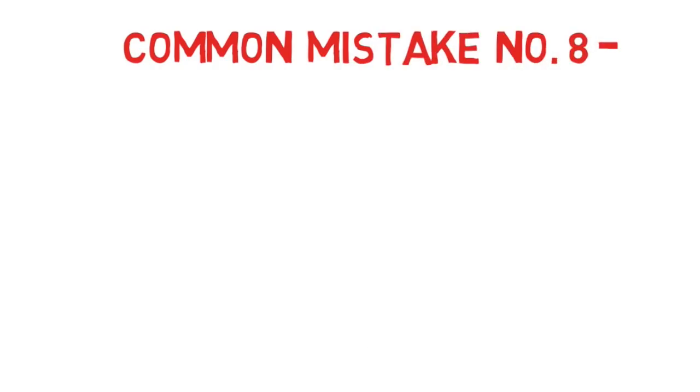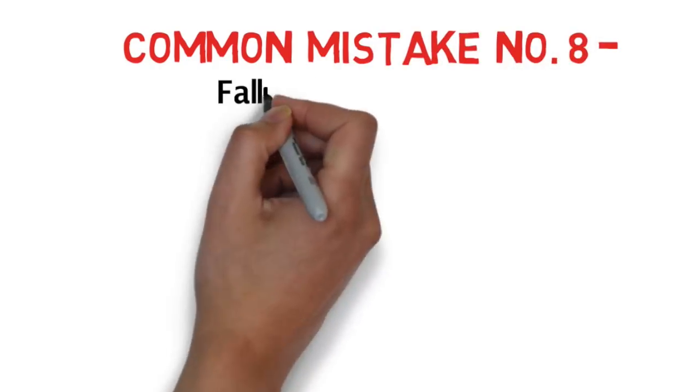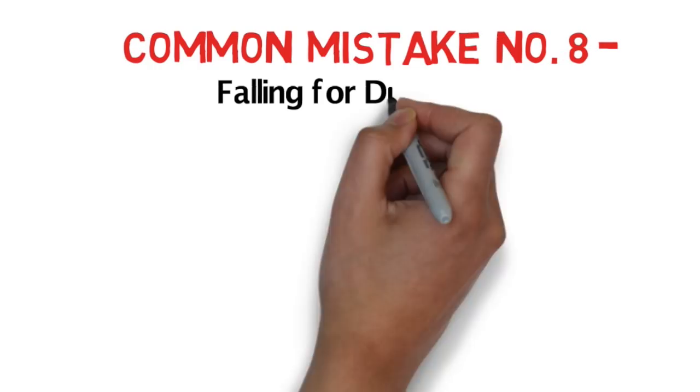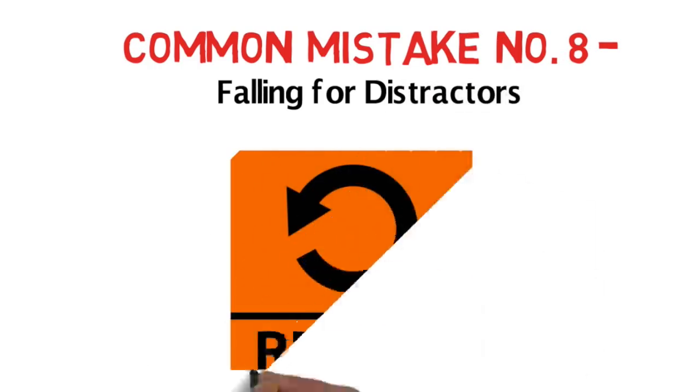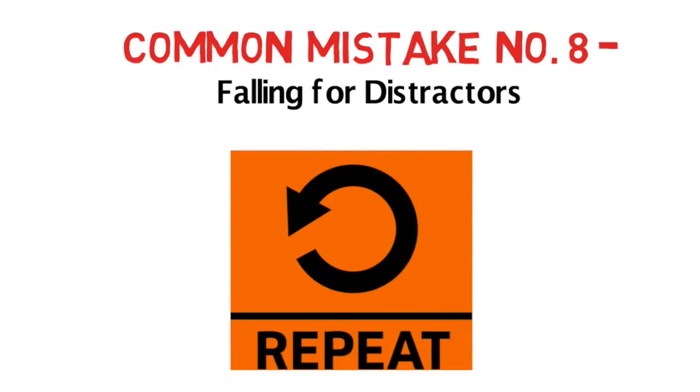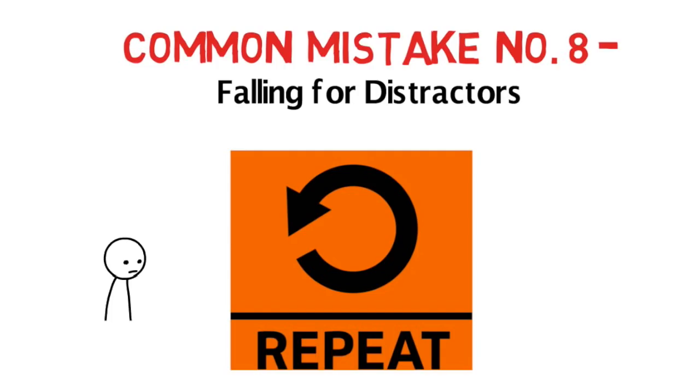Following in trap of distractors can be dangerous for your score too. Usually, the distractors are when they speak something and they repeat that or they try to correct it. Usually, they try to frame questions from there and these work as the distractors. Ideally, you should not mark the answer for the first thing that you have listened. Rather, you should listen carefully, pay attention, stay patient and then answer.